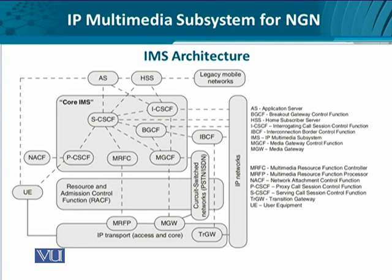The IMS architecture contains core nodes shown in the innermost rectangle, with certain entities known as the call session control functions. Variants of these include SCSCF, ICSCF, and PCSCF. These core IMS nodes are supported by BGCF, MRFC, and MGCF. We are going to spend considerable time discussing these network and node elements.